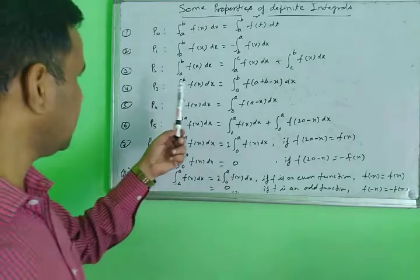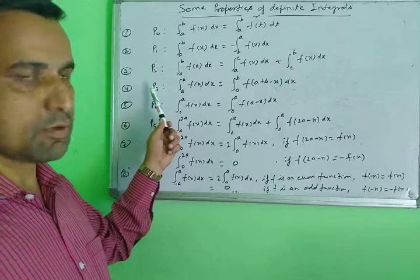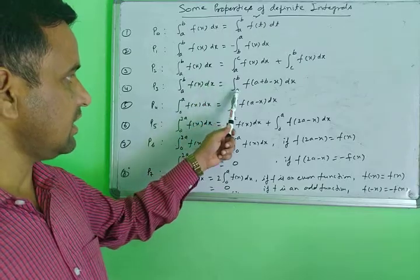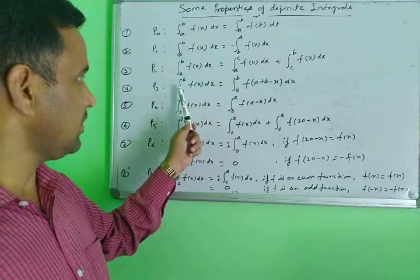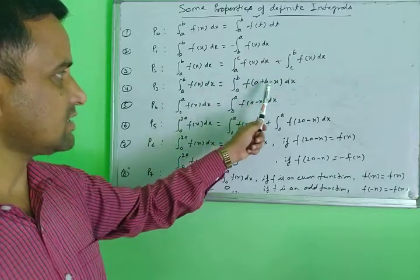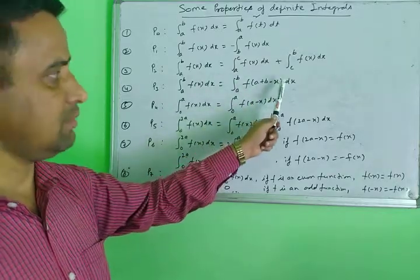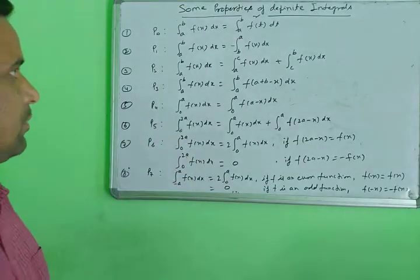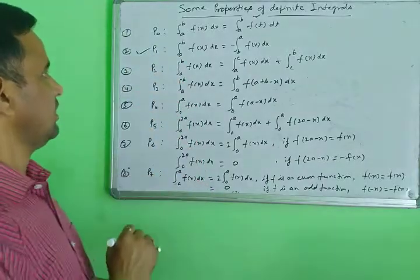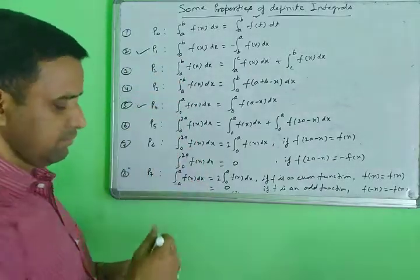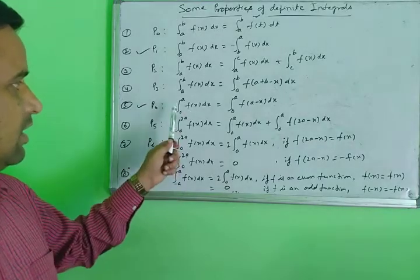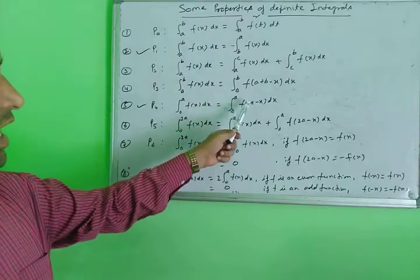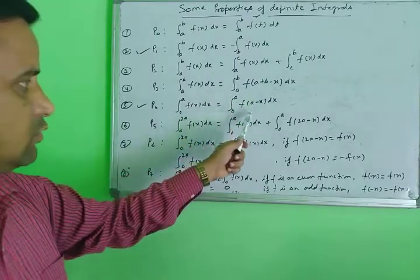Property P3: for the integral from a to b of f(x) dx, you can substitute x with a plus b minus x and use that form. Property P4 is very important: the integral from 0 to a of f(x) dx equals the integral from 0 to a of f(a minus x) dx.